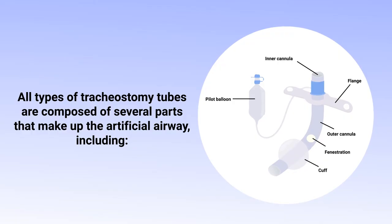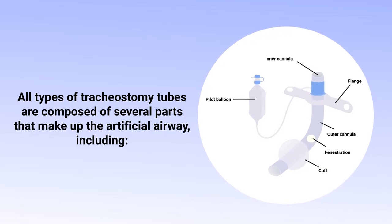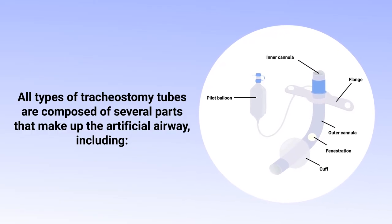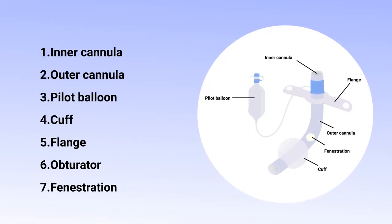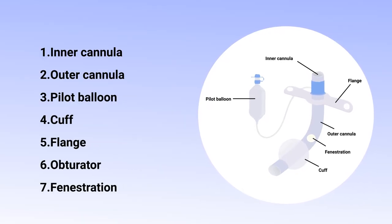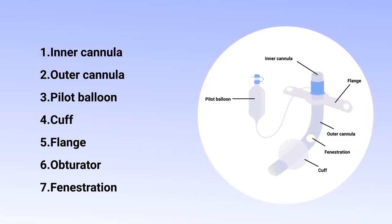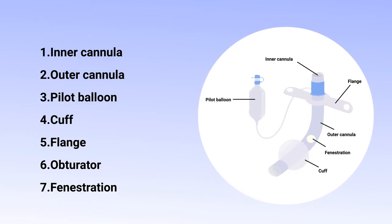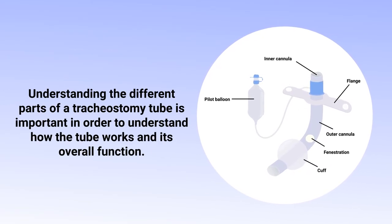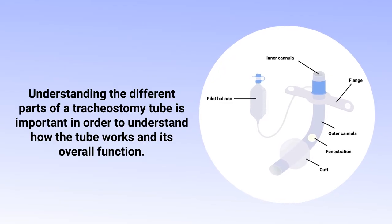All types of tracheostomy tubes are composed of several parts that make up the artificial airway, including the inner cannula, outer cannula, pilot balloon, cuff, flange, obturator, and the fenestration. Understanding the different parts of a tracheostomy tube is important in order to understand how the tube works and its overall function.